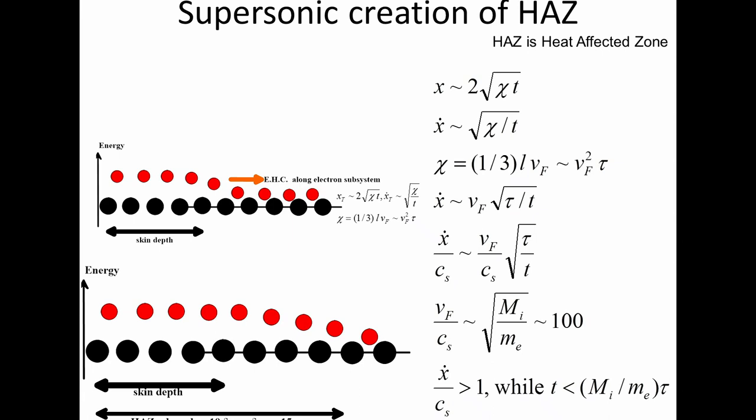For some time, this velocity is just heat wave propagation velocity. It is larger than the acoustic velocity, which is small because the ions are heavy. Therefore, this heat affected zone is created supersonically.